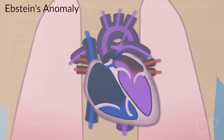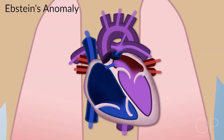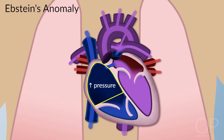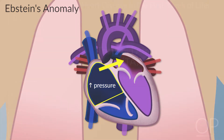Ebstein's anomaly is an abnormality of the tricuspid valve. These kids get severe tricuspid regurgitation, elevating their right atrial pressure, and they shunt right to left at the atrial level.